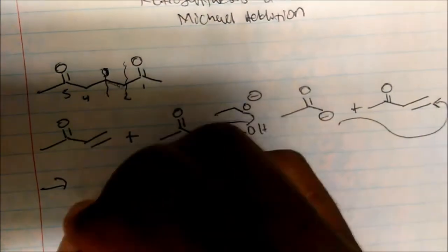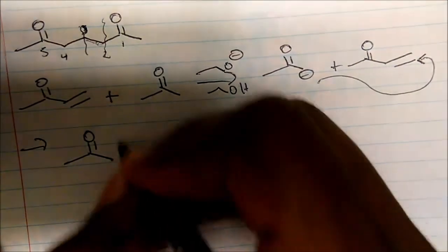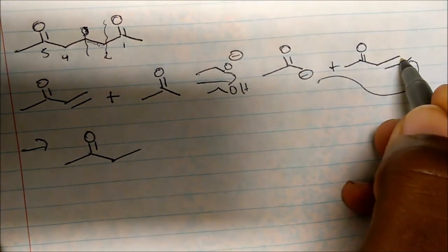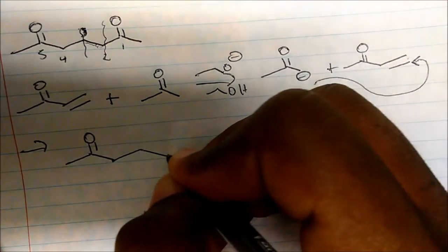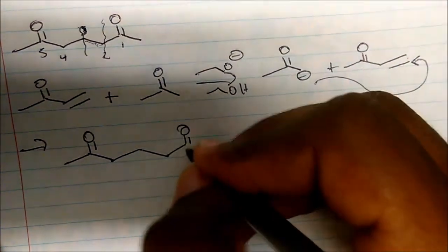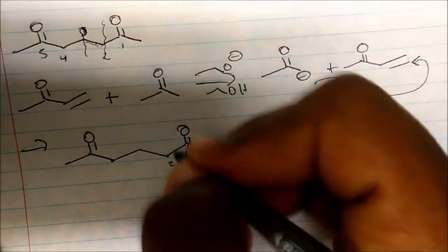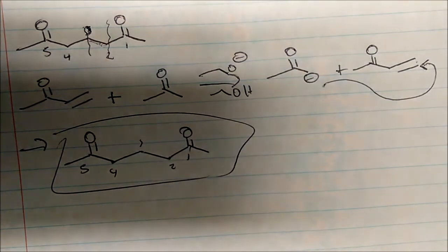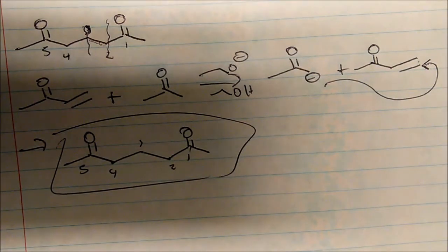So we arrive at the product: there's my alpha carbon, bonded to this carbon — I lose my double bond — and that carbon is bonded to the carbon that has my ketone. Counting 1, 2, 3, 4, 5: anytime I see any sort of 1,5-position carbonyl, I'm thinking about Michael addition.